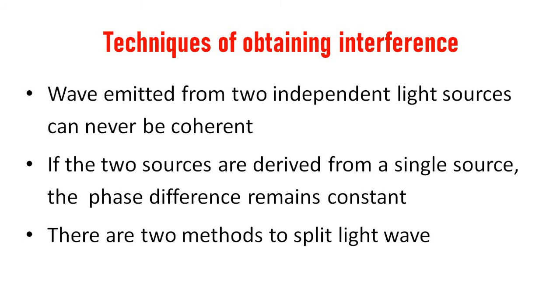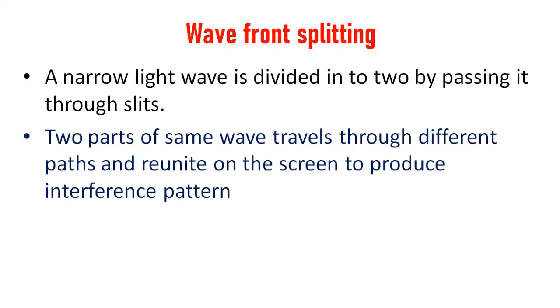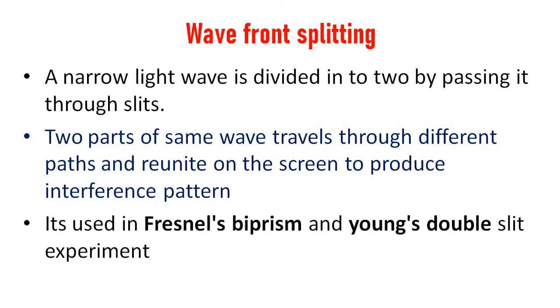There are two methods to split a light wave. In the first method — wavefront splitting — a narrow light wave coming out of a slit is divided into two by passing it through two slits. The two parts of the same wave travel through different paths and reunite on the screen to produce an interference or fringe pattern. This method is used in Fresnel's biprism and Young's double slit experiment.